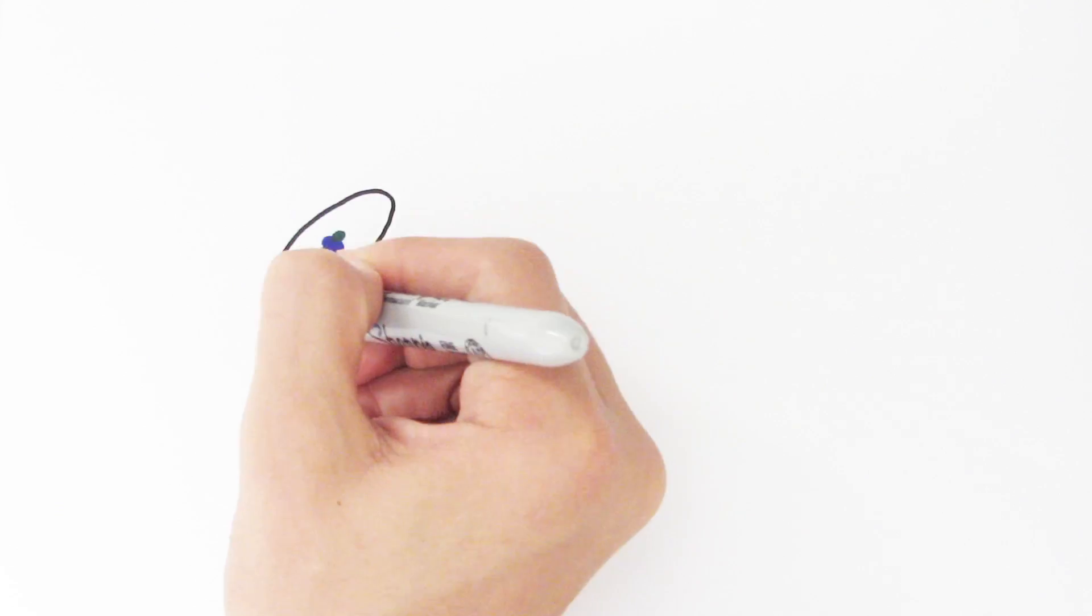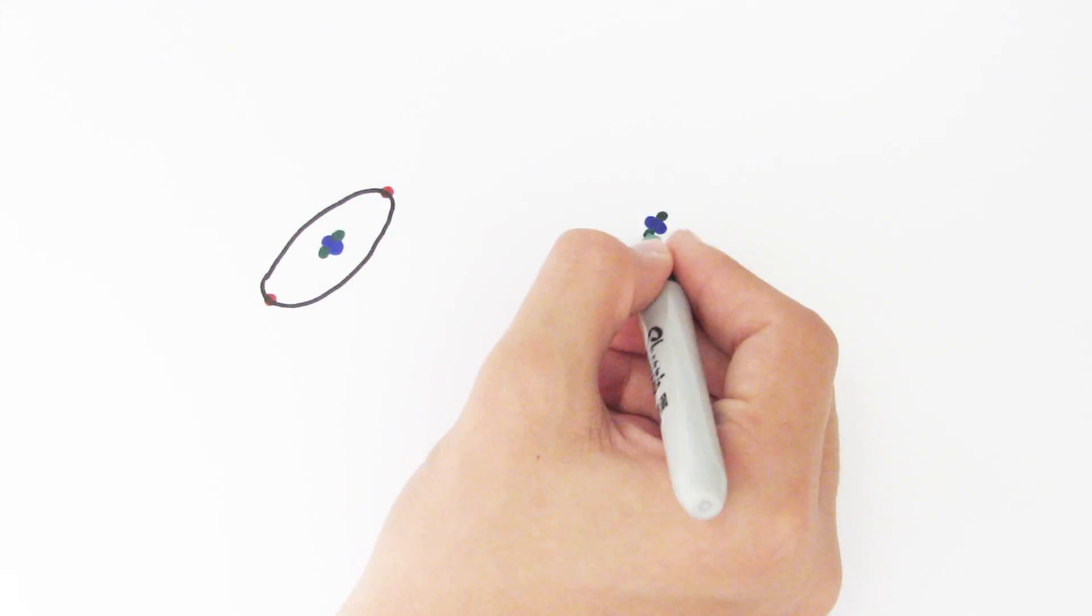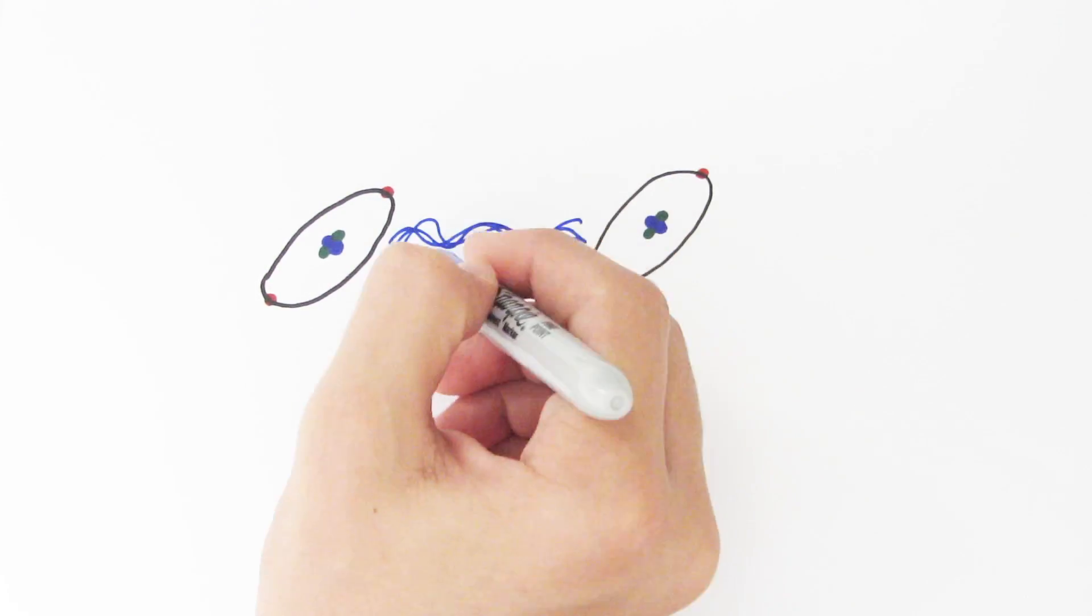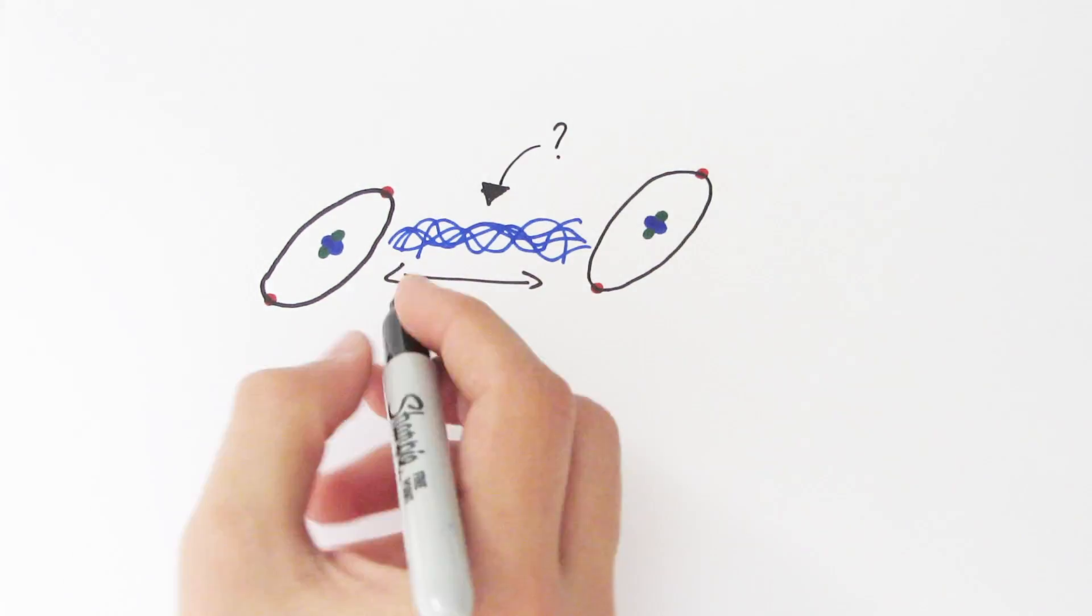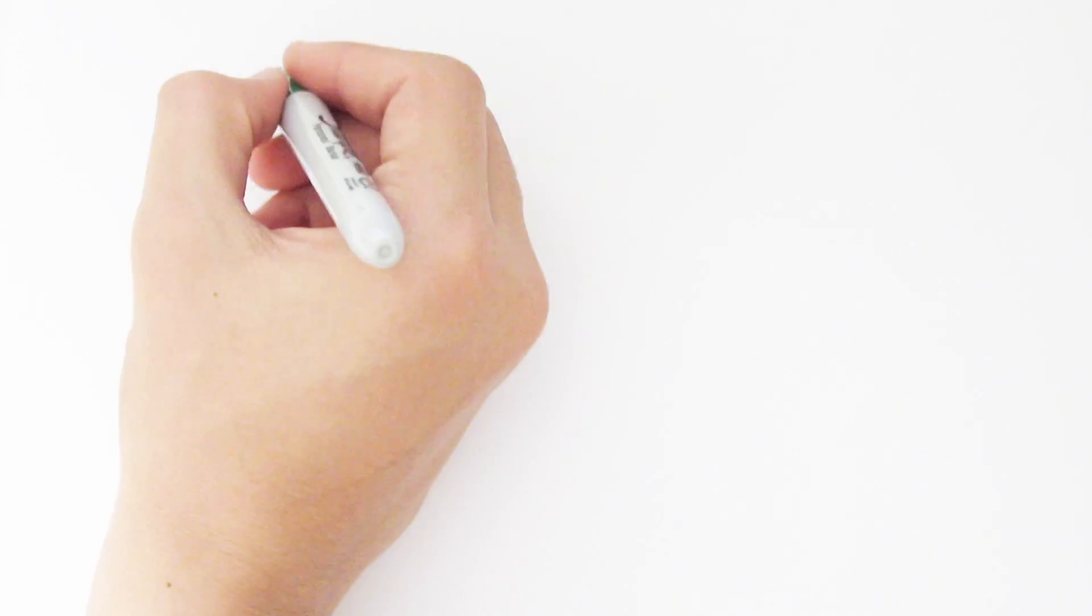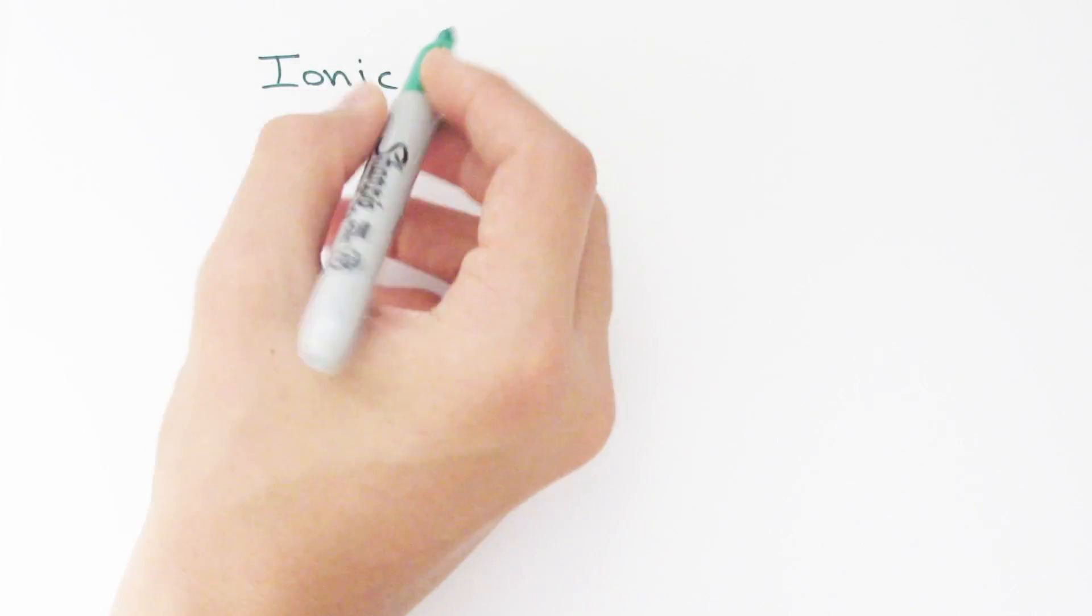You know that things are made of atoms, right? And we're made of many, many atoms. But what exactly holds those atoms together? Well, that's bonds. There are two types of bonding: ionic and covalent.